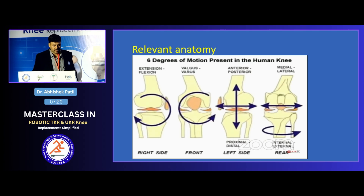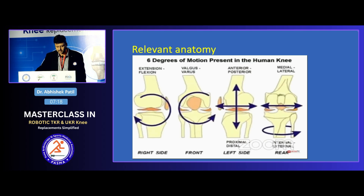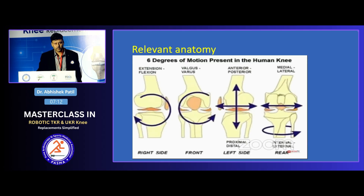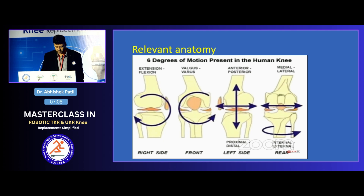The knee has six degrees of freedom: flexion, extension, abduction, adduction, internal and external rotation, and one more which is anterior-posterior glide — which is sort of neglected and not taken into consideration so often.